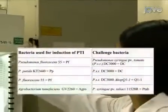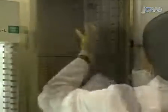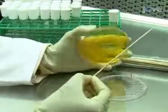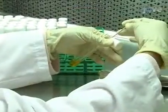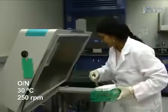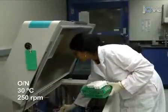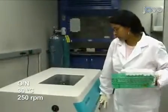For the agrobacterium, use a previously prepared fresh plate to start a liquid culture in 2 milliliters of LB. Grow overnight at 30 degrees Celsius with shaking.